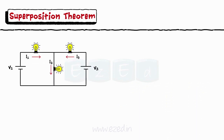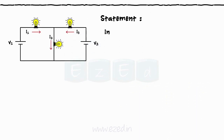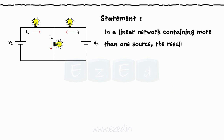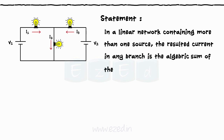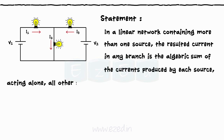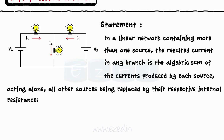This is the Superposition Theorem, which states that in a linear network containing more than one source, the resultant current in any branch is the algebraic sum of the currents produced by each source acting alone, all other sources being replaced by their respective internal resistances.